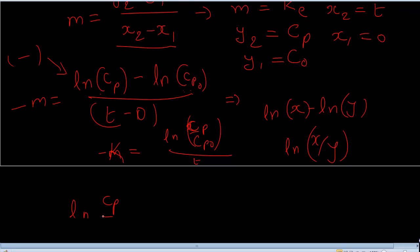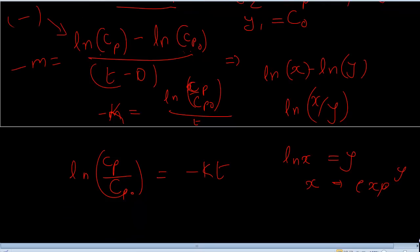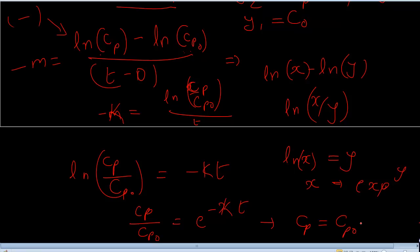Rewriting the equation: ln of Cp over Cp0 is equal to minus kt. If ln of x equals y, then x equals e to the power of y — that is applying the antilog. So Cp over Cp0 equals e to the power of minus kt, which gives us Cp equals Cp0 times e to the power of minus kt.